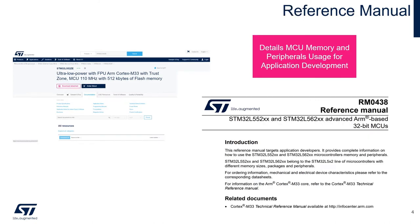When doing firmware and application development, you should heavily reference the micro's reference manual. The reference manual provides information on how to use the microcontroller's memory and peripherals. In addition, this is where you'll want to look for all the available registers and their meanings. The micro's corresponding reference manual can be found under the Documentation tab.